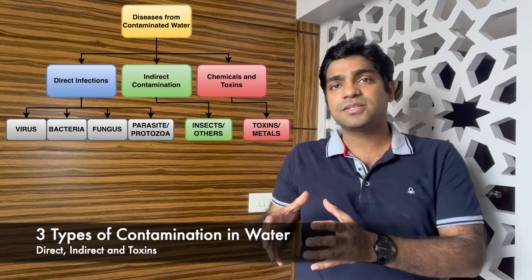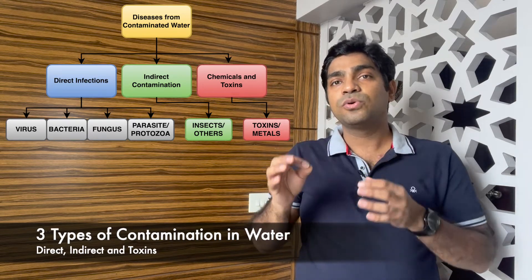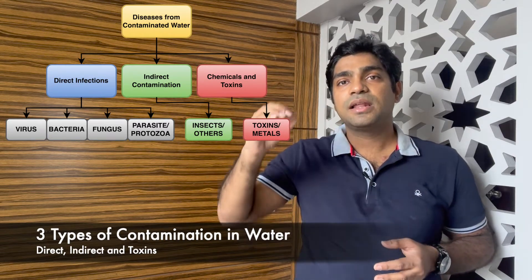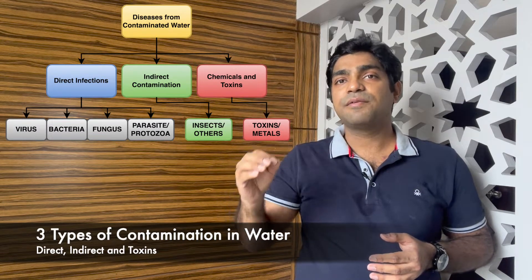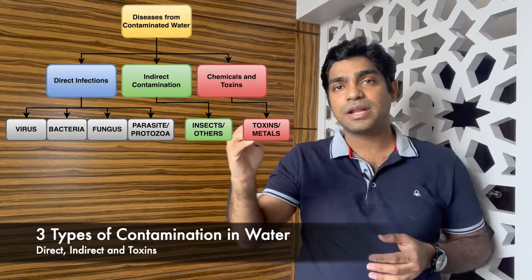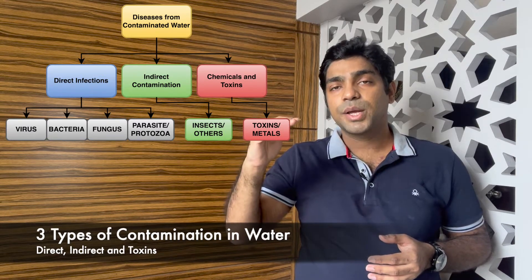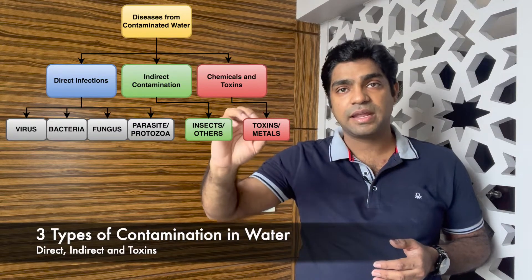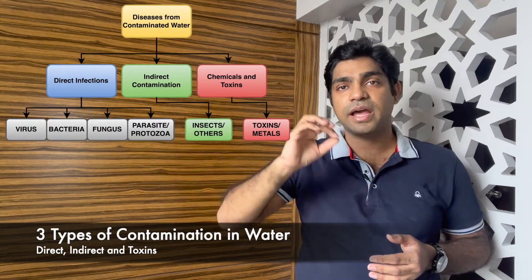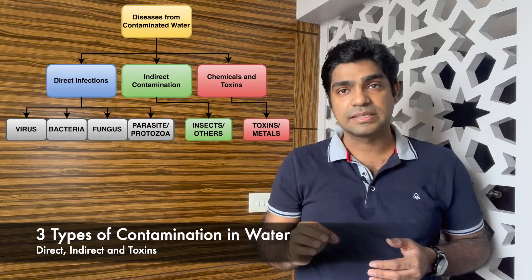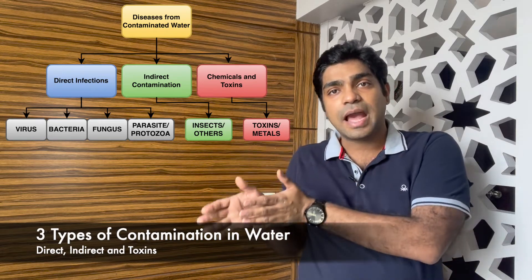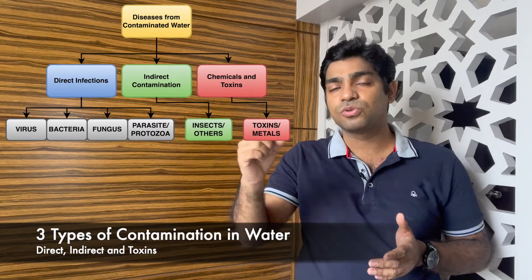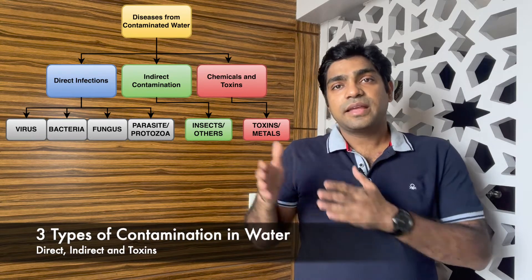The indirect cause of contamination is where water gives rise to insects and parasites which actually enter the body through the skin or through the bite of an insect and transmit the disease. These can be majorly dengue fever, malarial fever, and lymphatic filariasis. In malaria and dengue, the insects actually grow in fresh or stagnant water, and when they grow they can bite an infected person and then bite a normal person and transmit the disease. Lymphatic filariasis happens because of the filaria parasite being present within the water, which enters through the skin route.